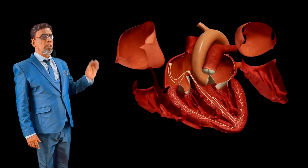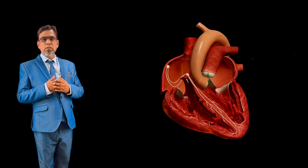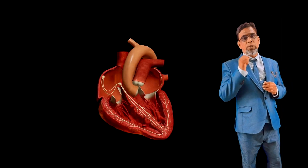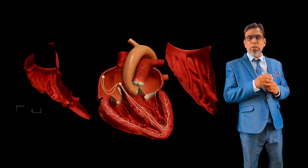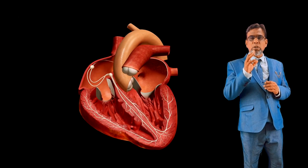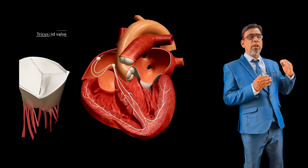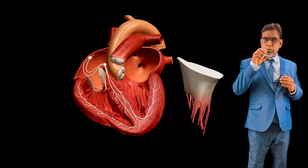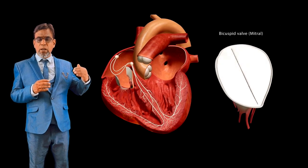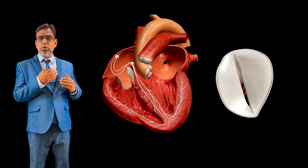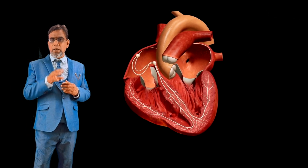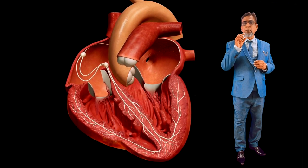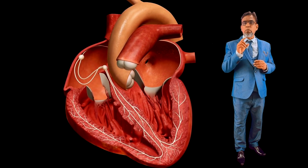The upper chamber auricles communicate with the ventricles through an opening called the auriculo-ventricular aperture. This aperture is guarded by valves — the tricuspid valve, which is present between the right auricle and right ventricle and has three muscular cusps, and the bicuspid valve, present between the left auricle and left ventricle, which has two muscular cusps. The bicuspid valve is otherwise called the mitral valve.